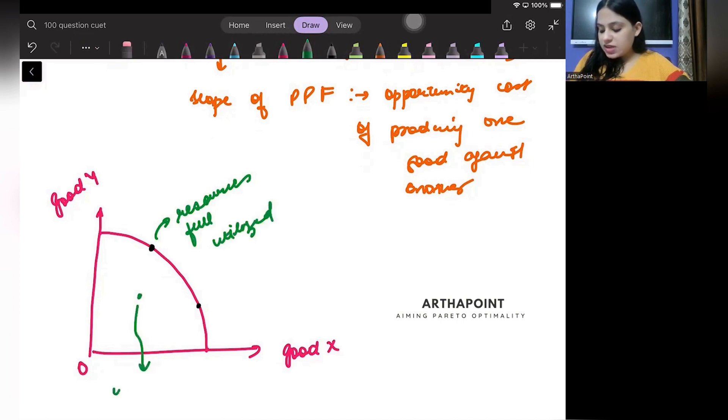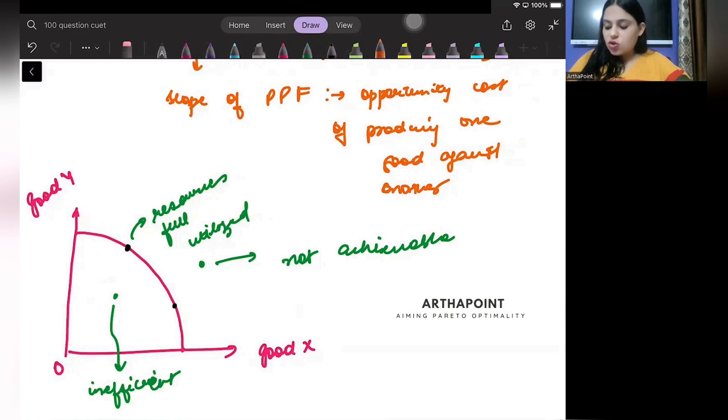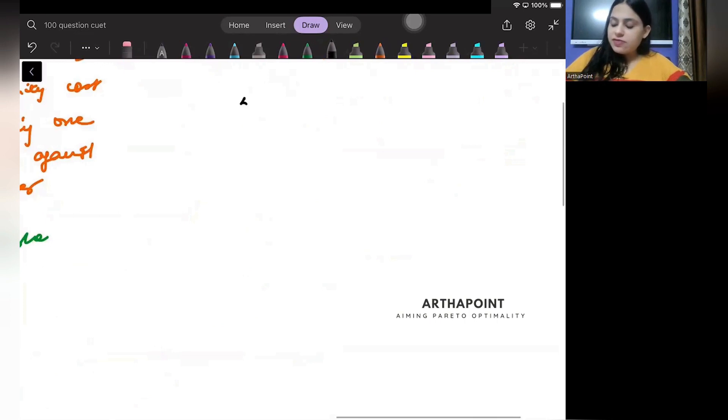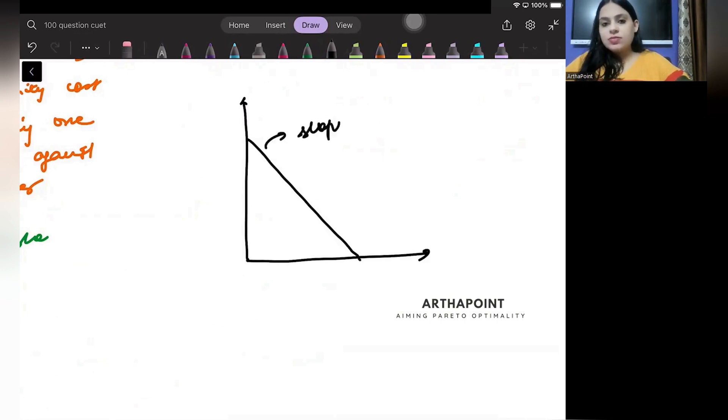Under the PPF is an inefficient point. Under the PPF, it means that it is not achievable. Now, this PPF is concave. But if my PPF becomes like this, it becomes a line. So, lines have constant slope.